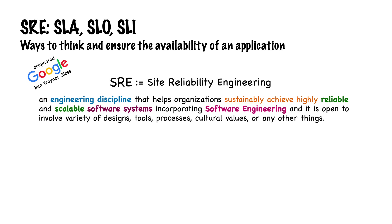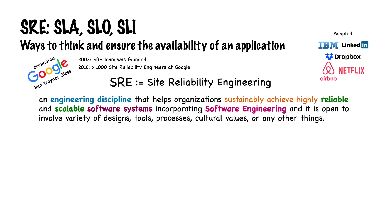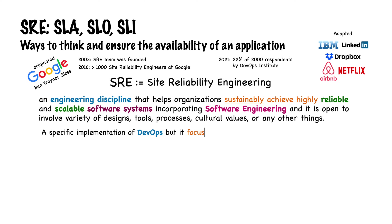SRE originated at Google with Ben Treynor Sloss. After he joined Google in 2003, he founded a site reliability team, and by 2016 Google already had more than 1,000 site reliability engineers. The SRE concept has been spreading since, and many organizations have adopted it, including Airbnb, Dropbox, IBM, LinkedIn, and Netflix. According to a 2021 report by the DevOps Institute, 22% of organizations in a survey of 2,000 respondents had adopted the SRE model. SRE itself is a specific implementation of DevOps, but it focuses specifically on building reliable systems.